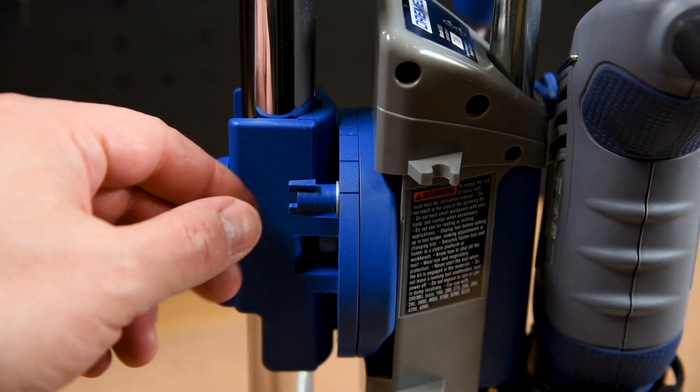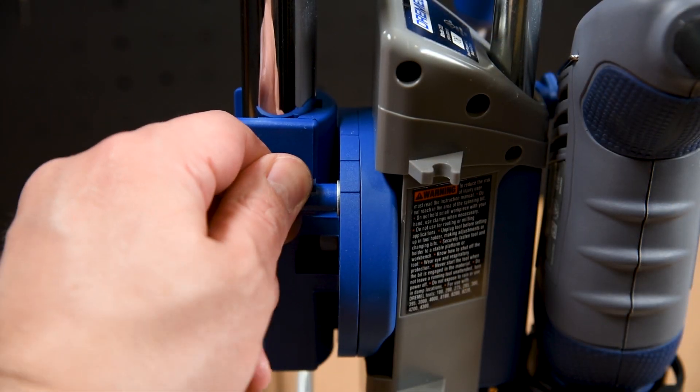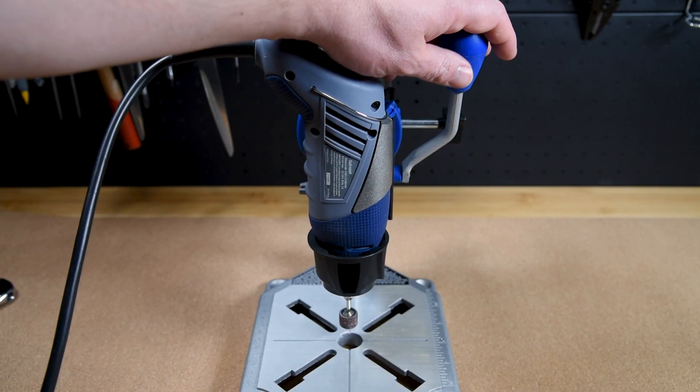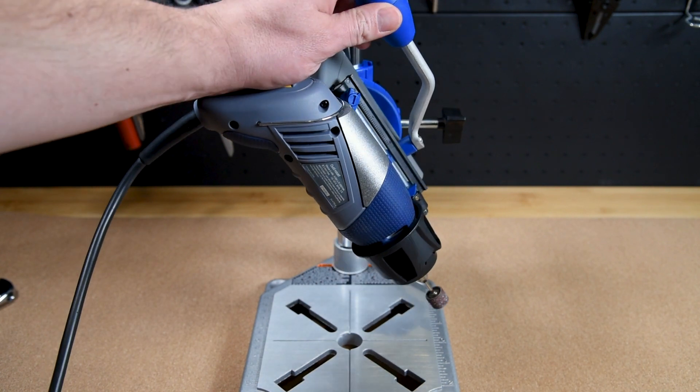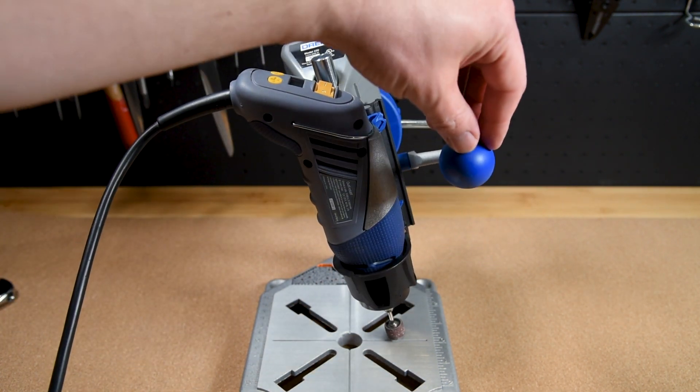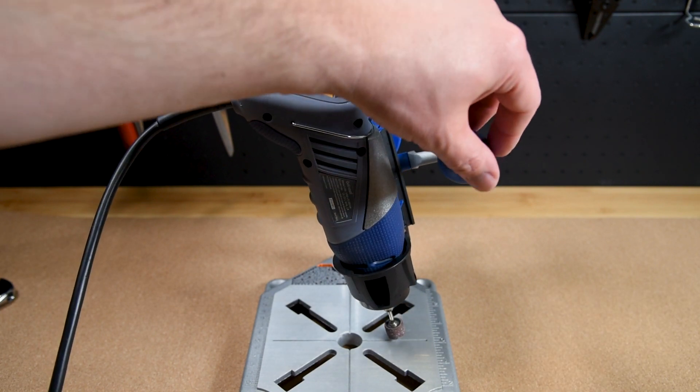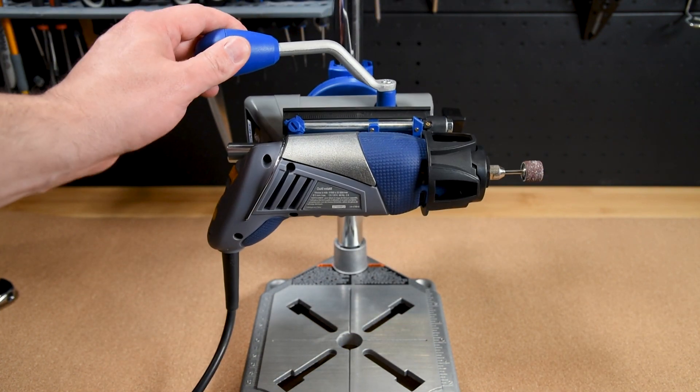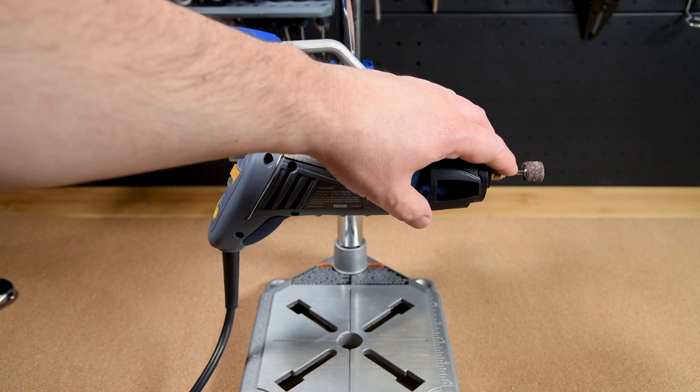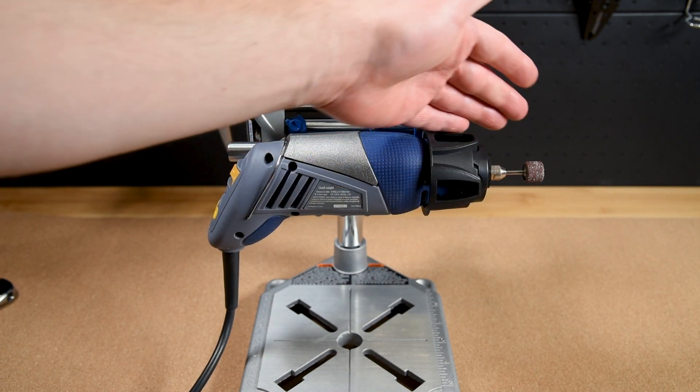Another interesting feature is by loosening this little thumb screw here and this other thumb screw on the other side, this will let you now rotate the housing up to 90 degrees. This gives you the ability to use your drill press on an angle but also it lets you lock the whole housing at a 90 degree angle. This lets you work with your rotary tool horizontally for sanding or grinding.